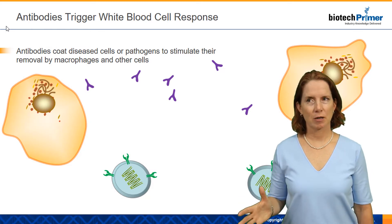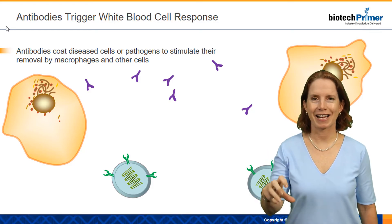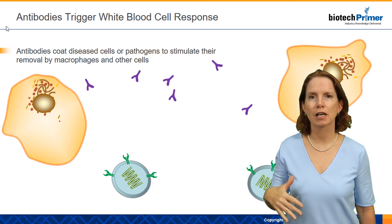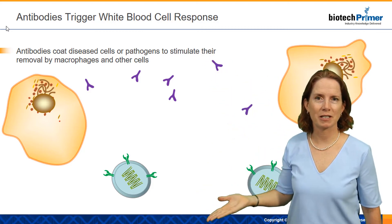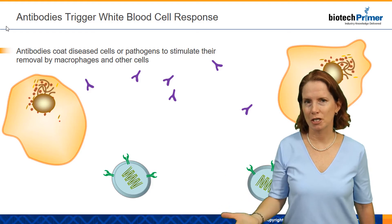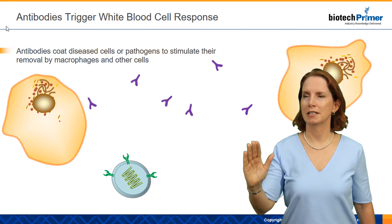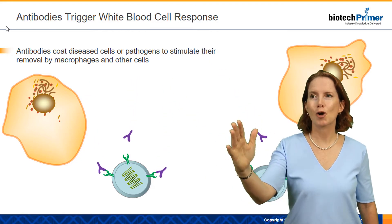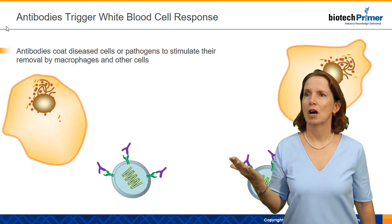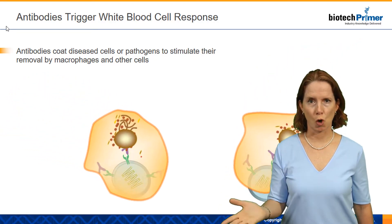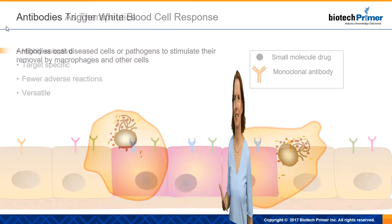The other key thing that antibodies do is they can trigger other white blood cells to attack a particular target. They act as flags or flares to alert white blood cells such as killer T cells or macrophages to attack whatever that antibody is attached to. As shown on our slide, the antibody recognizes a specific target protein, and then other white blood cells move in and destroy whatever it is — hopefully a bacteria or a virally infected cell.